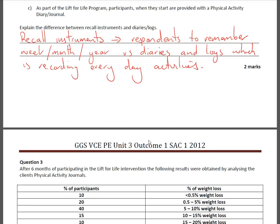Part C: As part of the Lift for Life program, participants are provided with a physical activity diary or journal. Explain the difference between recall instruments and diaries or logs. Recall instruments are generally used as a form of survey where respondents have to remember physical activity done in the last week, month, or year, and the information is generally for someone else. Whereas a diary or log is used every day to record physical activity, and more often than not it is used by the individual themselves.